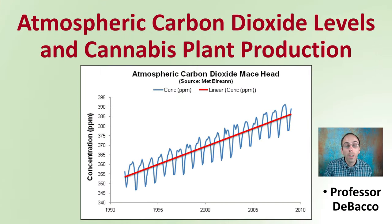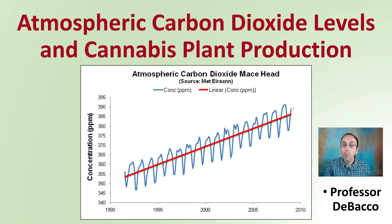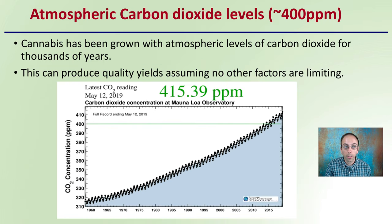Let's look at growing plants at atmospheric carbon dioxide levels related to cannabis production. When we talk about atmospheric conditions, they have been on the rise. We can see some variation, but overall there's a kind of linear progression. Running around 400-ish parts per million would be considered atmospheric levels. I'm going to use about 400 parts per million as that normal atmospheric level.